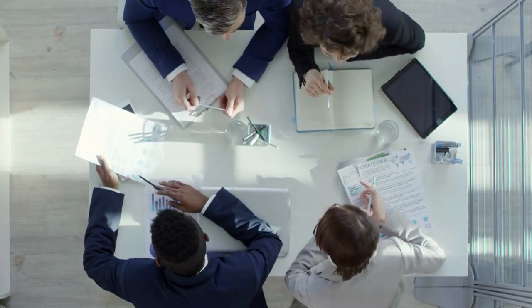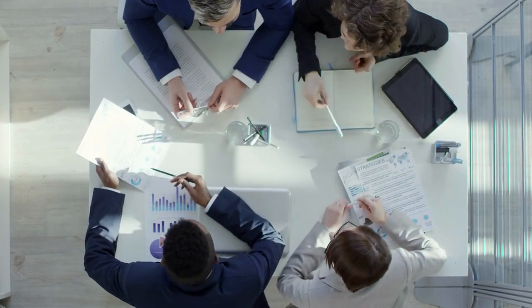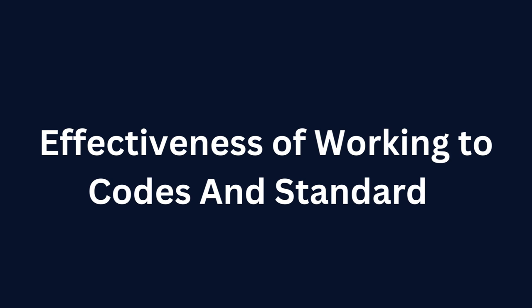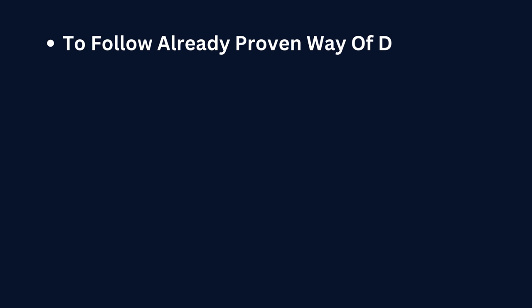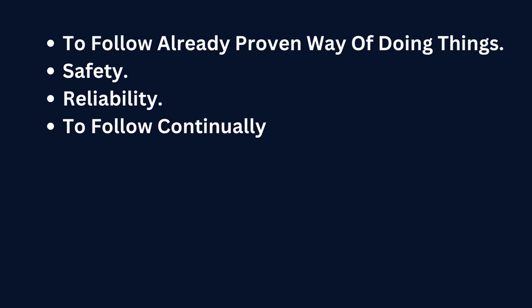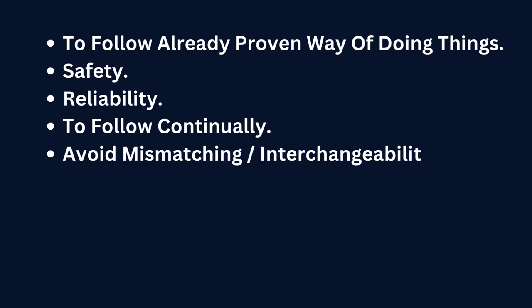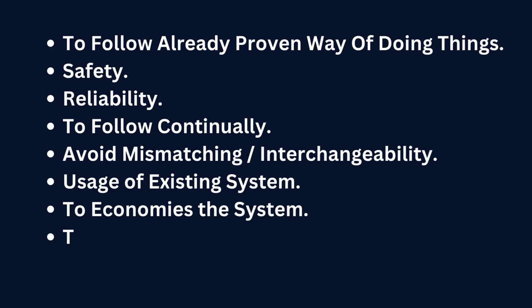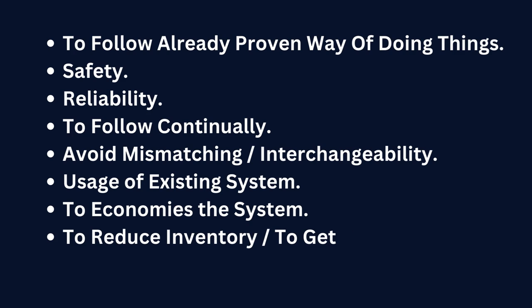Now, for each standard engineering practice, codes and standards are designed — but what about the effectiveness of codes and standards? The effectiveness of working to codes and standards is: to establish common agreement in engineering criteria, terms, principles, practices, materials, items, processes, etc.; to follow already proven ways of doing things; safety; reliability; to follow continually; avoid mismatching and ensure interchangeability; usage of existing systems; to economize the system; and to reduce inventory and get readily available backup from market.